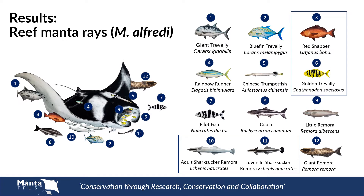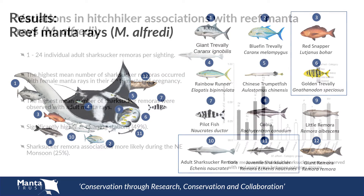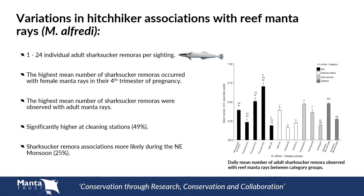The results identified 12 different species of hitchhiker with reef manta rays. Due to the low number of recorded associations with most hitchhiker species, only the adult and juvenile shark sucker remora, the Golden Trevally and Red Snapper were investigated further. The most frequently observed hitchhiker was the adult shark sucker remora, observed with reef manta rays during 10% of total sightings, ranging between 1 and 24 individuals per sighting. The highest mean number of shark suckers occurred with female mantas in their fourth trimester of pregnancy, which was significantly higher than with males, non-pregnant females and second-trimester pregnant females.